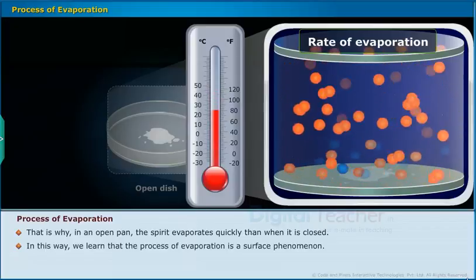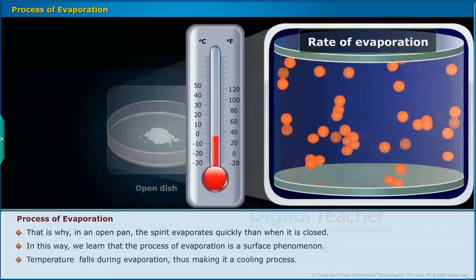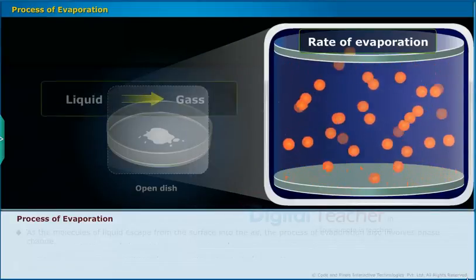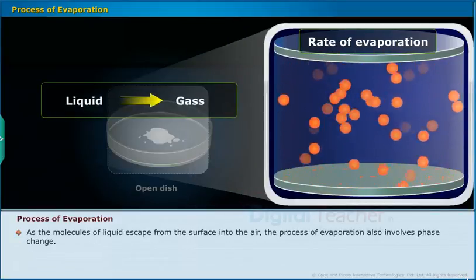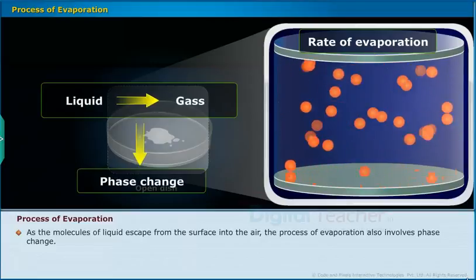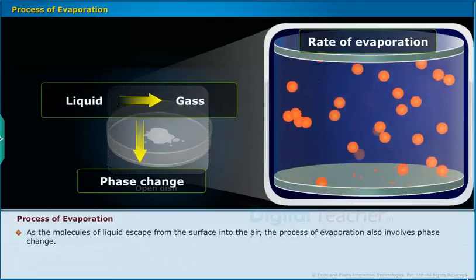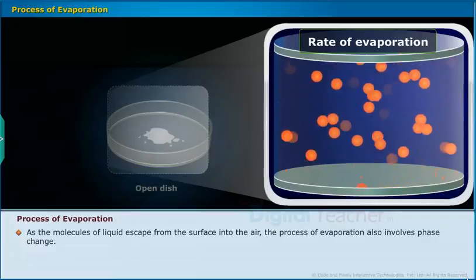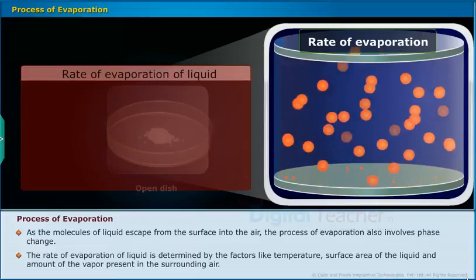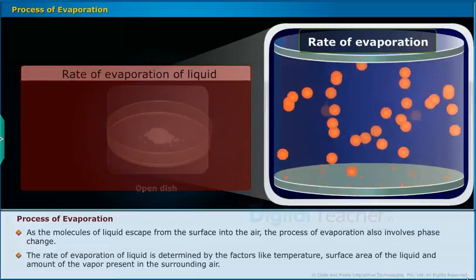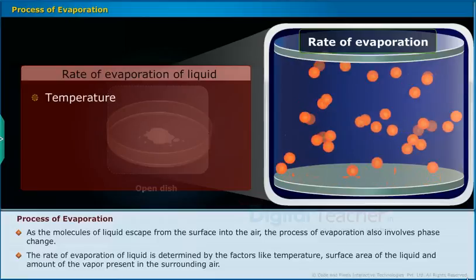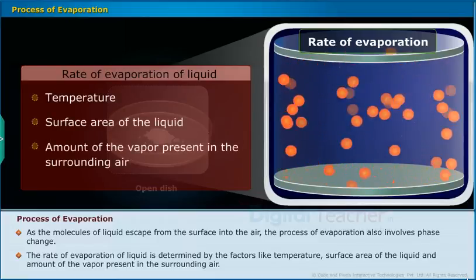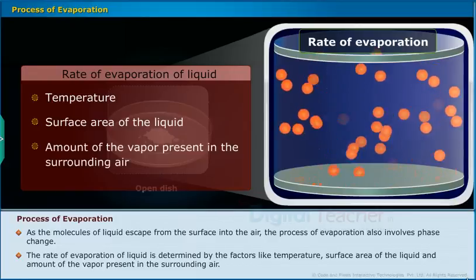Evaporation is a surface phenomenon; temperature falls during evaporation, making it a cooling process. As the molecules of liquid escape from the surface into the air, the process of evaporation also involves phase change. The rate of evaporation of liquid is determined by factors like temperature, surface area of the liquid, and the amount of vapor present in the surrounding air.